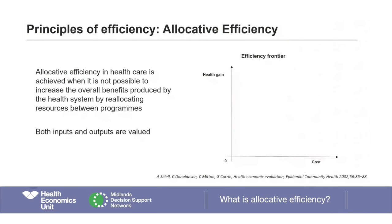Now let's move to the last concept of efficiency: allocative efficiency. Whereas the first two concepts focus on doing things right, allocative efficiency is about doing the right thing. Allocative efficiency in healthcare is achieved when it is not possible to increase the overall benefit produced by the health system by reallocating resources between programs. Both inputs and outputs are valued, normally in terms of costs and health gain. As defined by McGuire and Witter, allocative efficiency is concerned with maximizing the impact of health-promoting interventions across a broad range of activities. It is about whether to do something or how much of it to do, rather than how to do it.